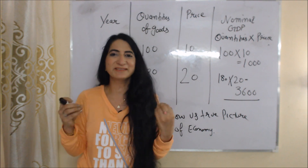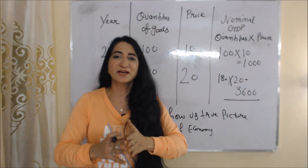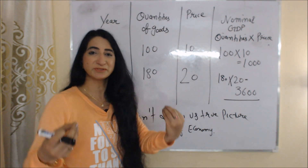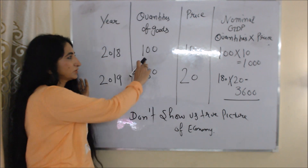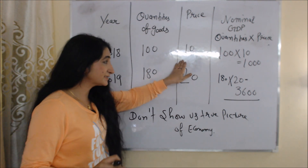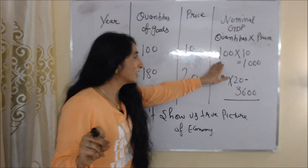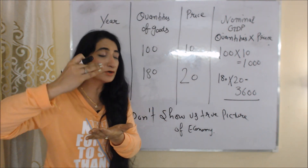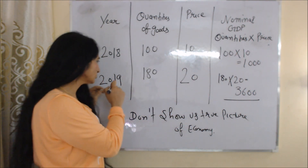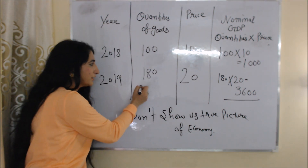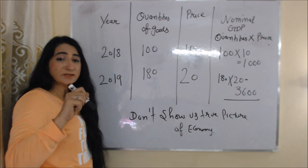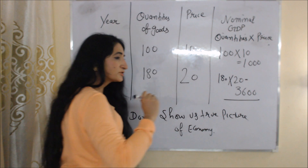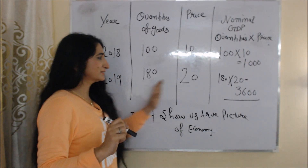Now we will understand nominal GDP with the help of an example. Here we assume only one good is being produced in the economy. In 2018, total production of the good is 100 and the existing price in 2018 is 10, so 100 multiplied by 10 equals 1000 — our nominal GDP in 2018 is 1000. In 2019, total production is 180 and the existing price is 20, so nominal GDP in 2019 is 3600.